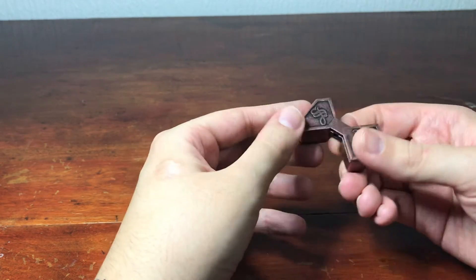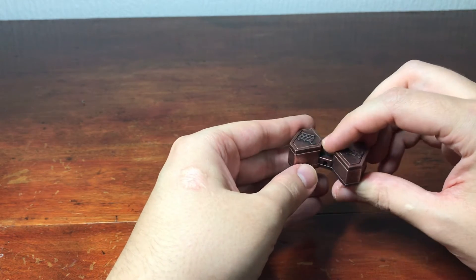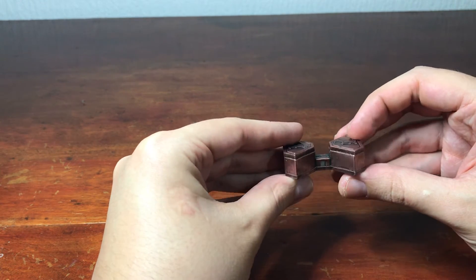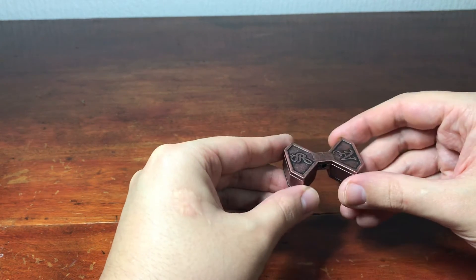You can put your finger in there if you want, just to stop those pegs coming out while you turn it over, or you can very carefully just turn it over this way like that.